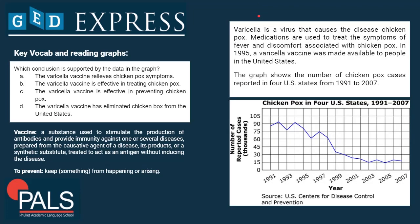This question is on key vocabulary and reading graphs very carefully. Varicella is a virus that causes the disease chicken pox. Medications are used to treat the symptoms of fever and discomfort associated with chicken pox. In 1995, a varicella vaccine was made available to people in the United States. The graph shows the number of chicken pox cases reported in four US states from 1991 to 2007. On the y-axis we see the number of reported cases, and on the x-axis we see the years 1991 to 2007.